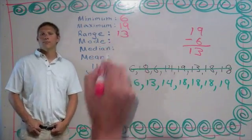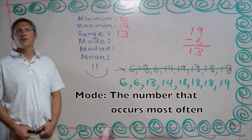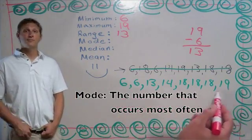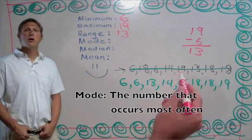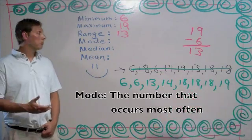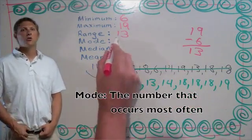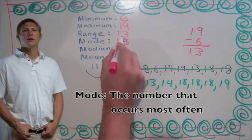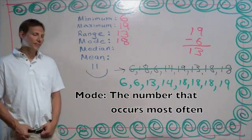Now let's look at mode. Mode is the number in the series that occurs most often. Because we put our numbers in order, we can easily see that the number 18 shows up more than any other number, so 18 is our mode.